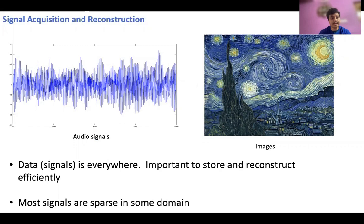In the present world, data is ubiquitous and the amount of big data is increasing exponentially. It is a significant challenge to store this data efficiently and reconstruct it. Since most data sets such as raw images or raw audio signals have a large size, it is difficult to design efficient algorithms without any structural assumptions. Luckily, in practice, most signals are sparse in some domain. That is, we can use some kind of basis transform such as a wavelet transform or a Fourier transform to represent the signal as a sparse vector where most of the entries are zero.